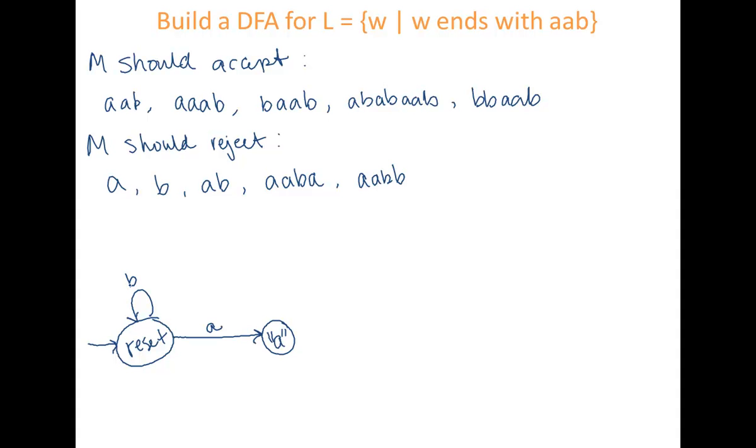And if I see a B while I'm in my start state, I'm just going to stay in my start state. It means I haven't started seeing this sequence yet. So now I've got all the transitions I need out of the reset state. I need one transition on each of the two symbols.